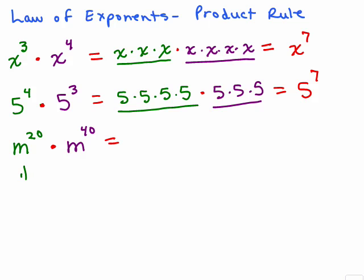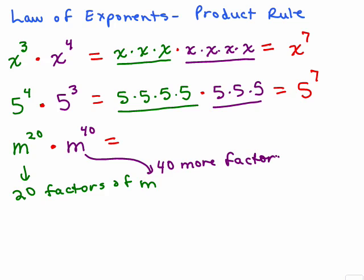Well, I'm going to have 20 factors of M here, right? And then I'm going to have 40 more. So how many am I going to have all together? Sixty, look at that.